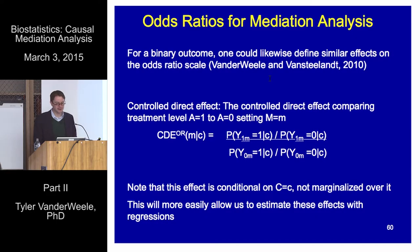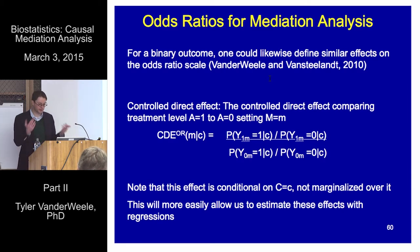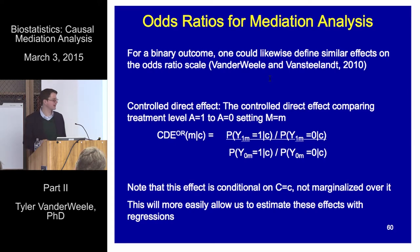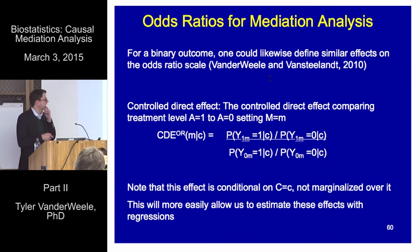Often with the binary outcome, we use the ratio scale, sometimes for interpretative ease, sometimes because the study design effectively requires it. In the case of mediation, it also corresponds most naturally to what comes out of regression models. But the same ideas essentially carry over from the difference scale to the ratio scale. We can define, for example, the controlled direct effect on an odds ratio scale as the contrast of the two same counterfactuals, y1m versus y0m, fixing the mediator to m, changing the exposure from 0 to 1.